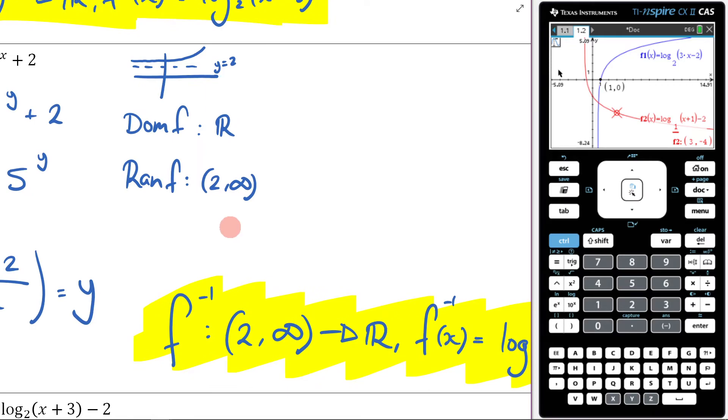So now when we try to figure out the domain of the inverse and the range of the inverse, what is that going to be? Well, this is going to be 2 to infinity, and this is going to be all real numbers, because we know that they just swap.